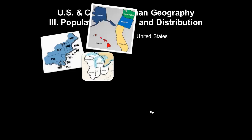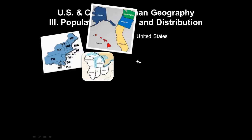Talking about the major population centers of the United States, each one of these pictures represents those centers. We have the Northeast with Pennsylvania, New York, Vermont, New Hampshire, Connecticut, and New Jersey. We have the Great Lakes region with Illinois, Indiana, Ohio, and Wisconsin. And the Pacific Coast region with mostly California, Oregon, and Washington.